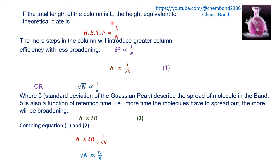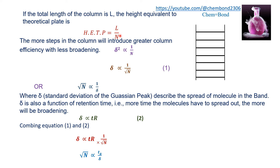If the total length of the column is L, the height equivalent of a theoretical plate is H = L/N. L is the length of the column, and N is the number of imaginary theoretical plate sections. More theoretical plates in the column introduce greater column efficiency with less broadening. Band broadening, represented by sigma squared, is inversely proportional to N, the number of theoretical plates.